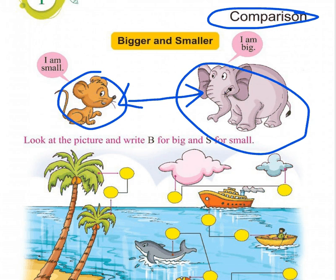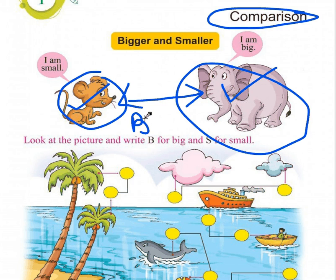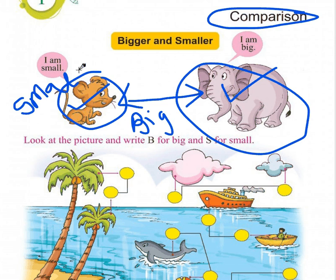Here an elephant and a rat are given. The elephant is obviously bigger than the rat — hathi chuhe se bada hai. Jab cheezein badi hongi toh hum usko English mein kehte hain 'big', aur jab cheezein choti hongi size mein toh hum unhe bolte hain 'small'. B for big and S for small.